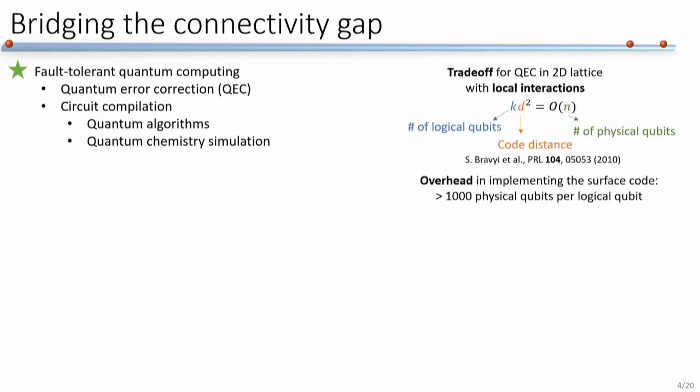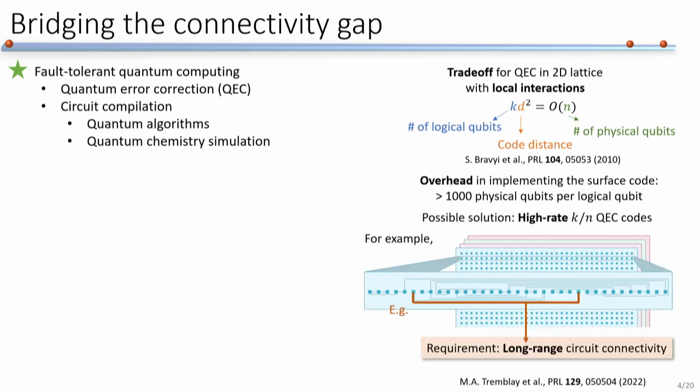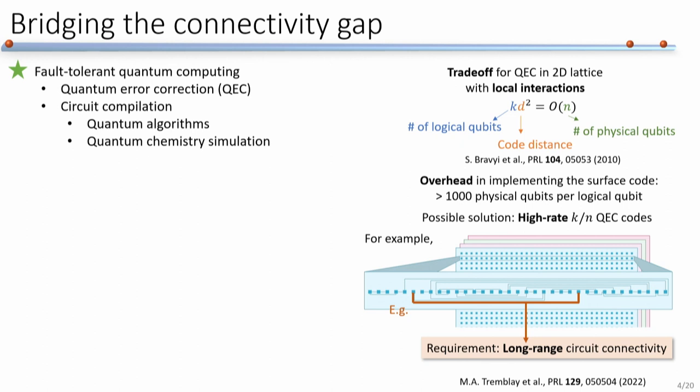For quantum error correction, if we have only nearest-neighbor connectivity in a 2D plane, there's a natural constraint between the number of logical qubits we can encode versus the code distance for a fixed number of physical qubits. This results in a very large overhead if we use surface code. One possible solution is to go to higher-rate quantum error correcting codes such as LDPC codes, but those naturally require longer-range circuit connectivity. That is our grand goal for fault-tolerant quantum computation.